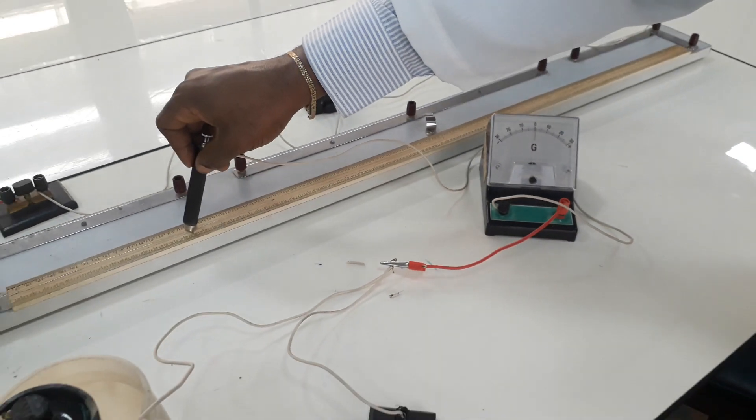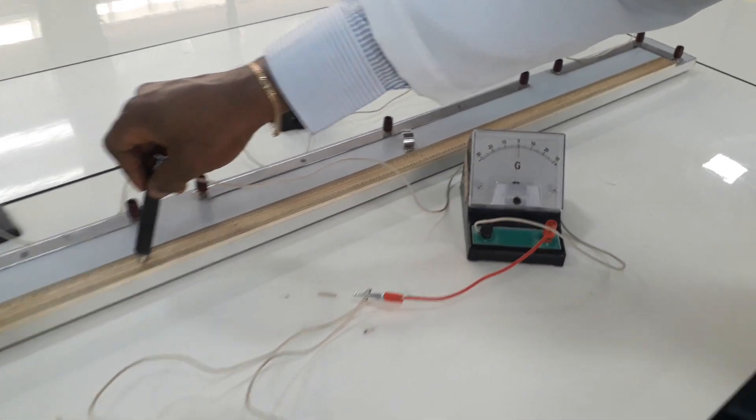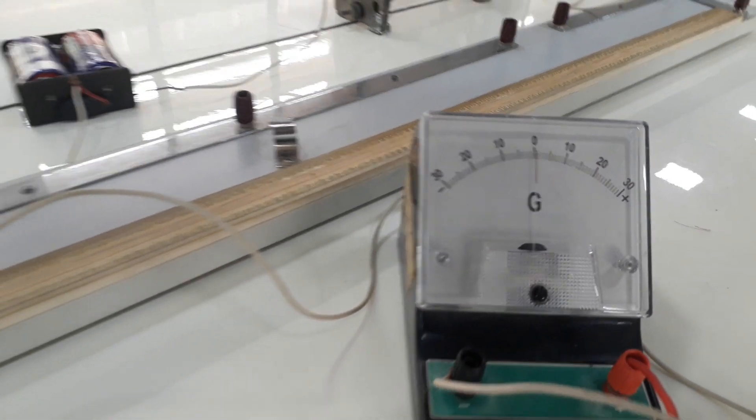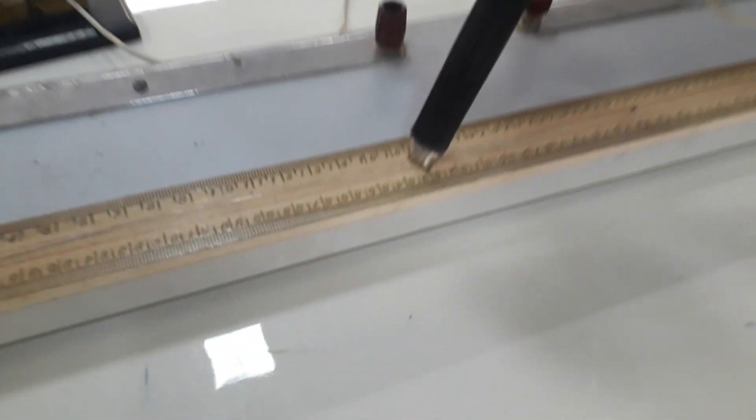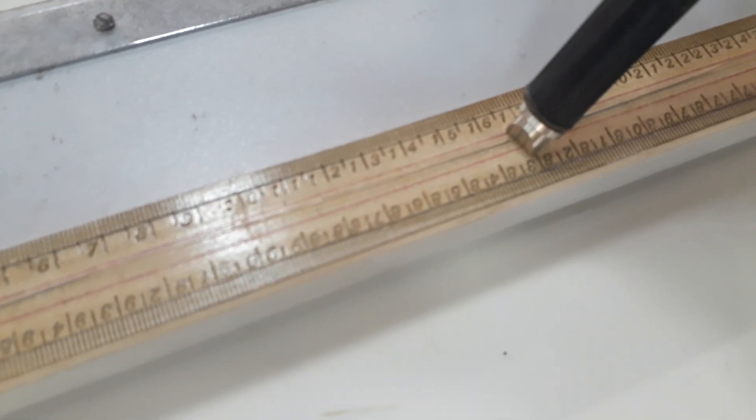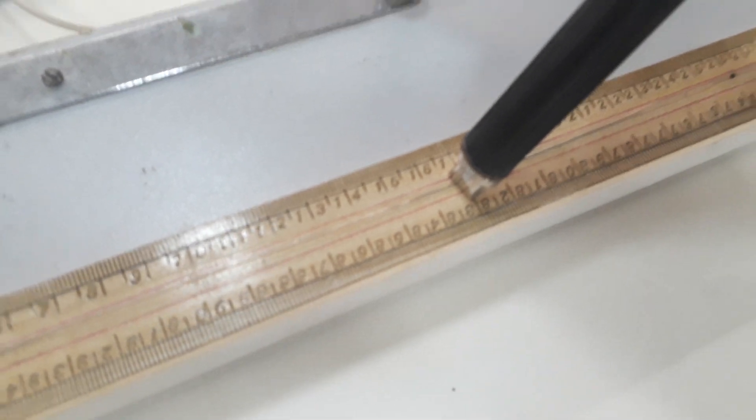Here we go. You can see that the galvanometer is at zero. I will take my reading on the meter rule that is attached to the potentiometer. At this point, I can see that it is 17 cm.